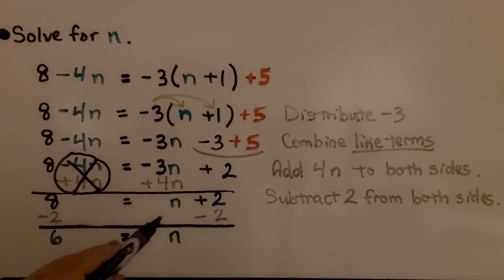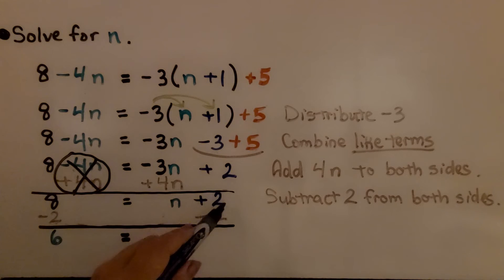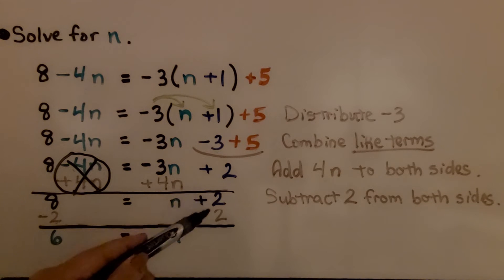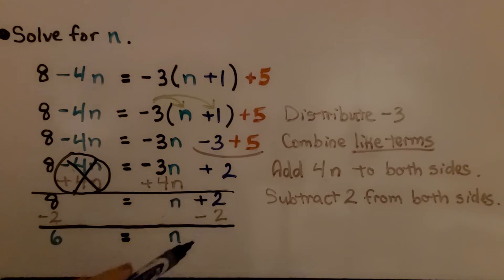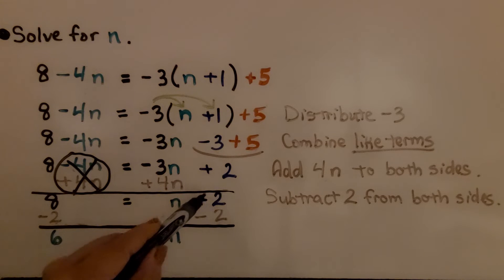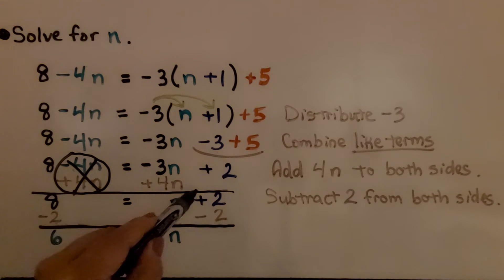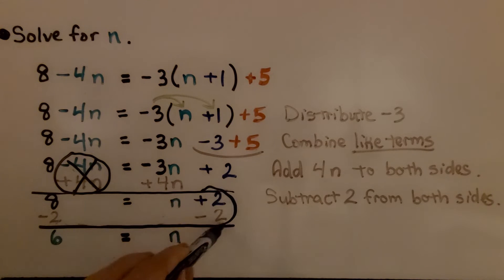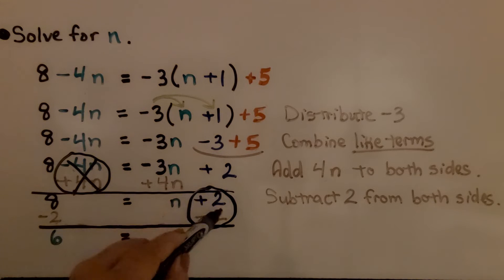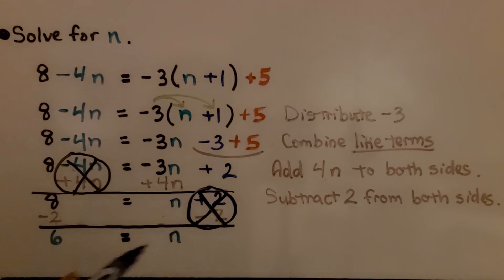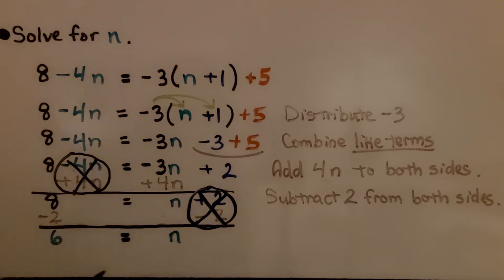We have 8 is equal to n plus 2. Now we can get rid of this 2. If it's a plus 2 we do minus 2 on each side. That's going to create a zero pair here to eliminate it. And 8 minus 2 is 6. We have 6 is equal to n.